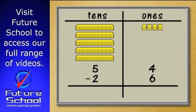Look at the ones column of the number sentence. We need to take 6 away from 4. Look at the ones column of the place value columns. We don't have 6 ones to take away. We only have 4.